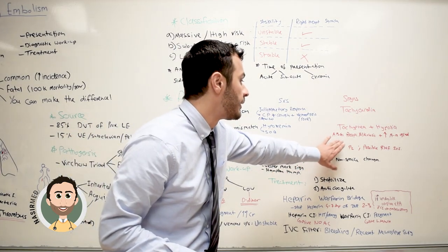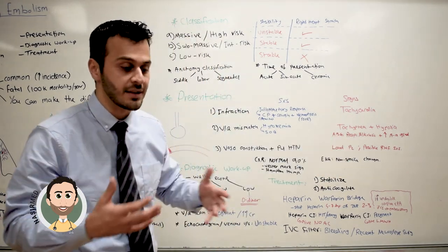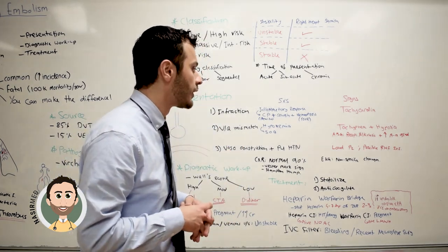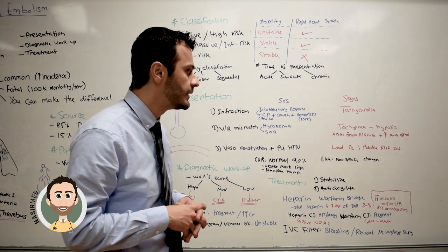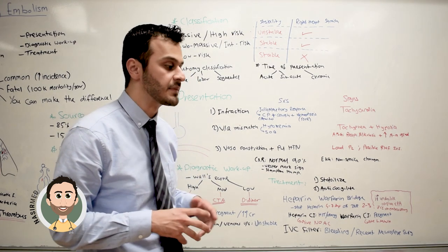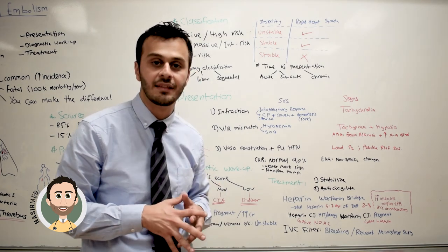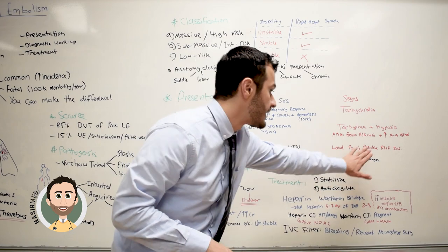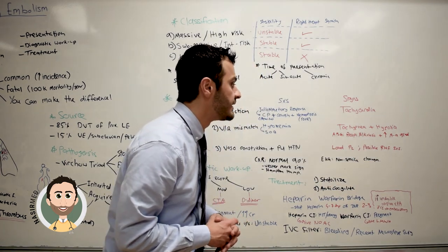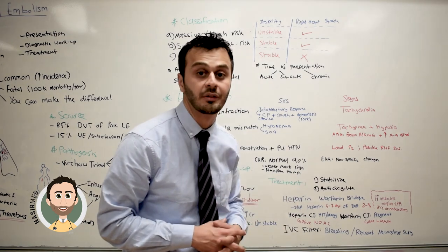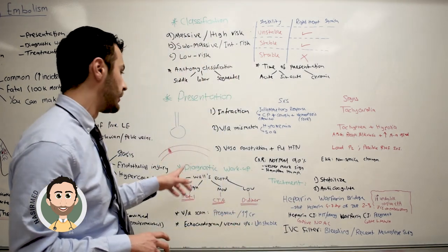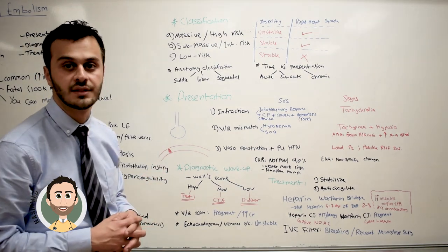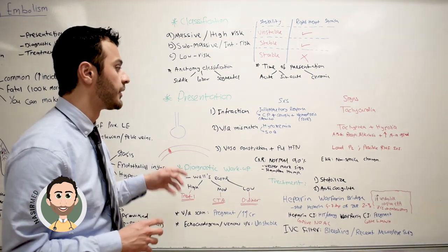When we take an arterial blood gas on these patients, they are mainly going to present with respiratory alkalosis, because as they hyperventilate, they excrete CO2 out of the blood, causing a significant increase in blood pH. This also causes a significant increase in the alveolar-arterial gradient, due to the perfusion deficit in the pulmonary artery.